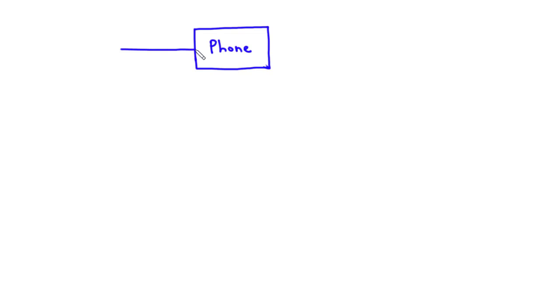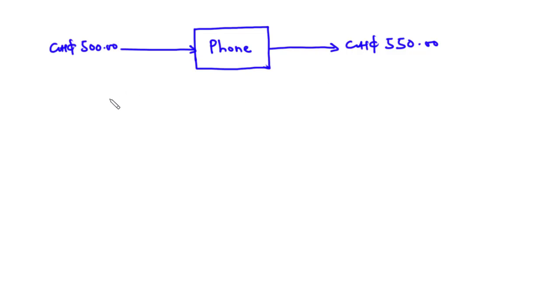So let's assume you bought a phone from a wholesaler, a manufacturer, or a third party at 500 Ghana cedis, and then later you sold the phone at 550 Ghana cedis to a friend. The amount you used in buying the phone is called the cost price, and the amount you sold the phone for is called the selling price.